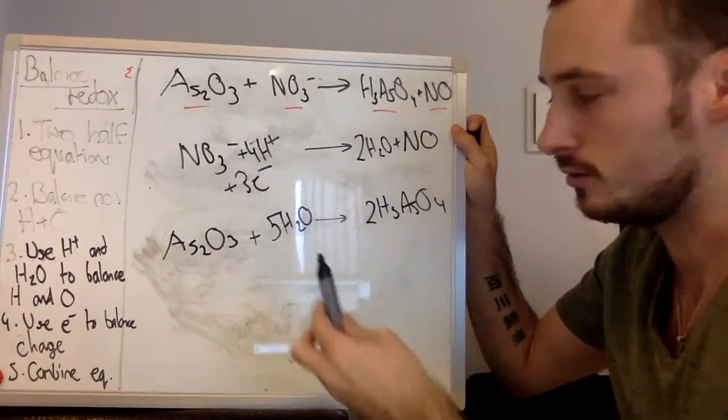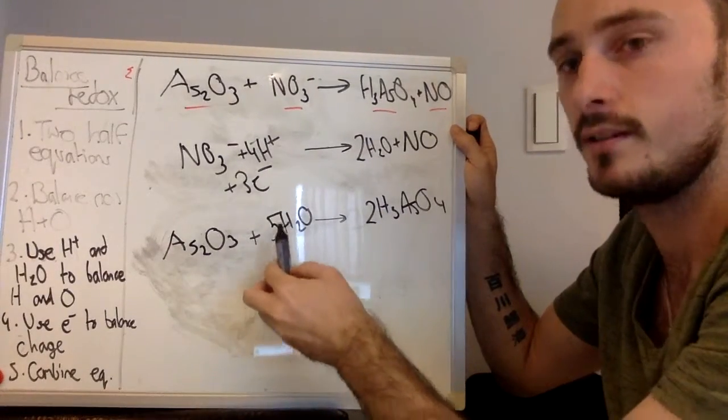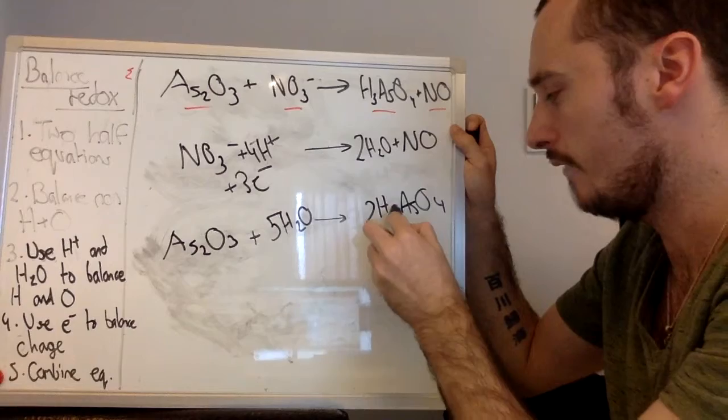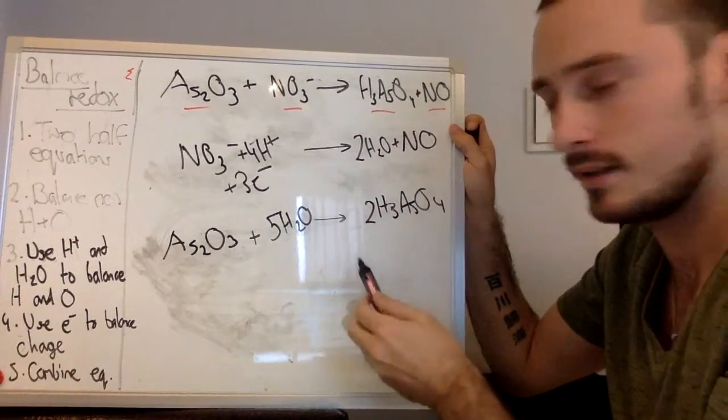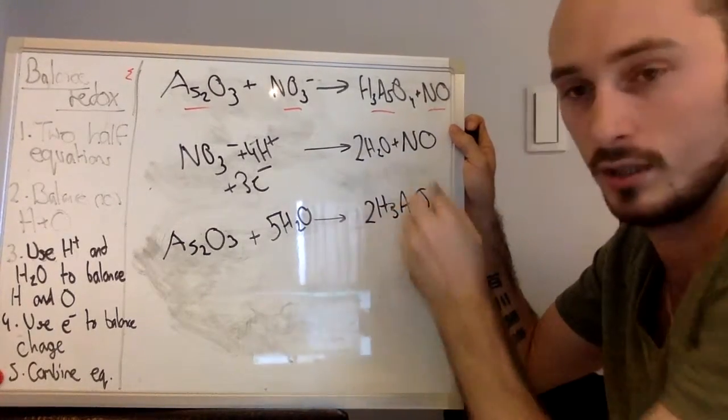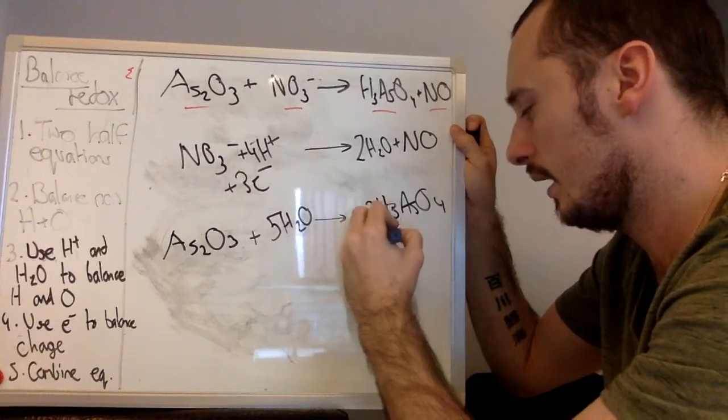Now we balance the H's. On this side, we have 10. On this side, we have six. As such, we need four H's on this side, and that's what we're going to add in here.